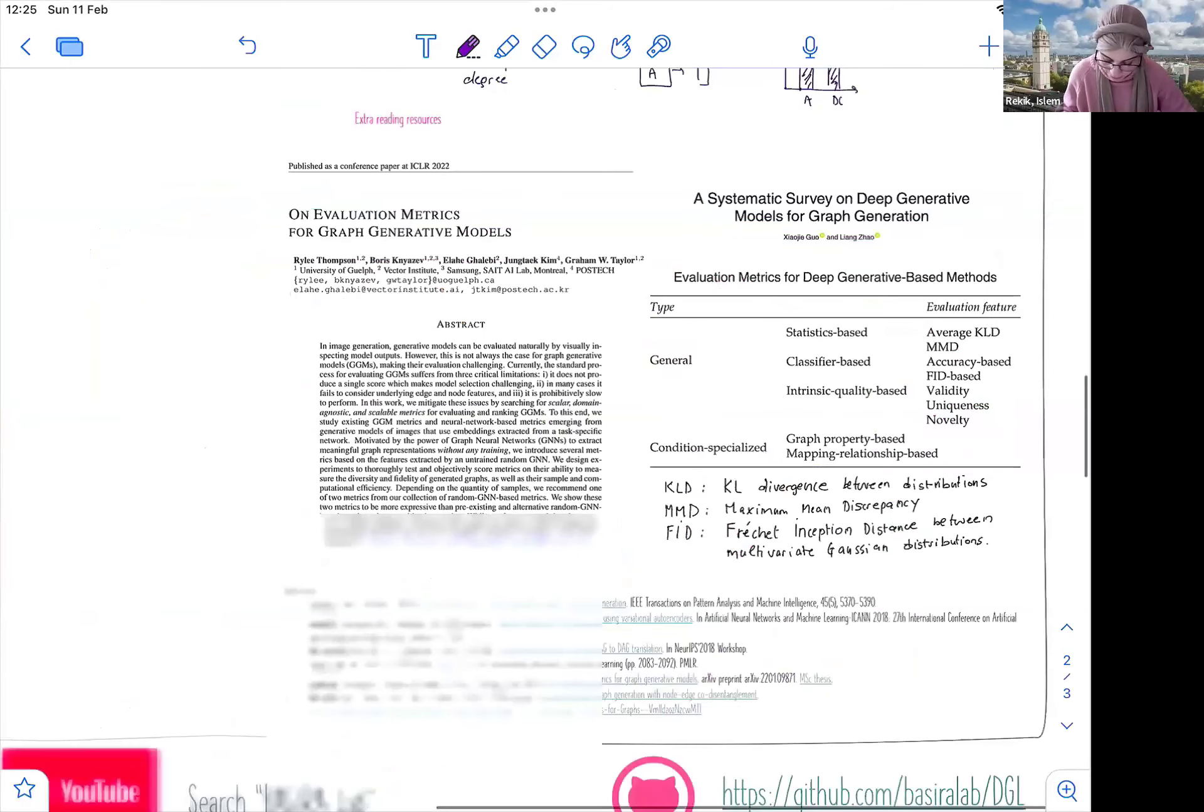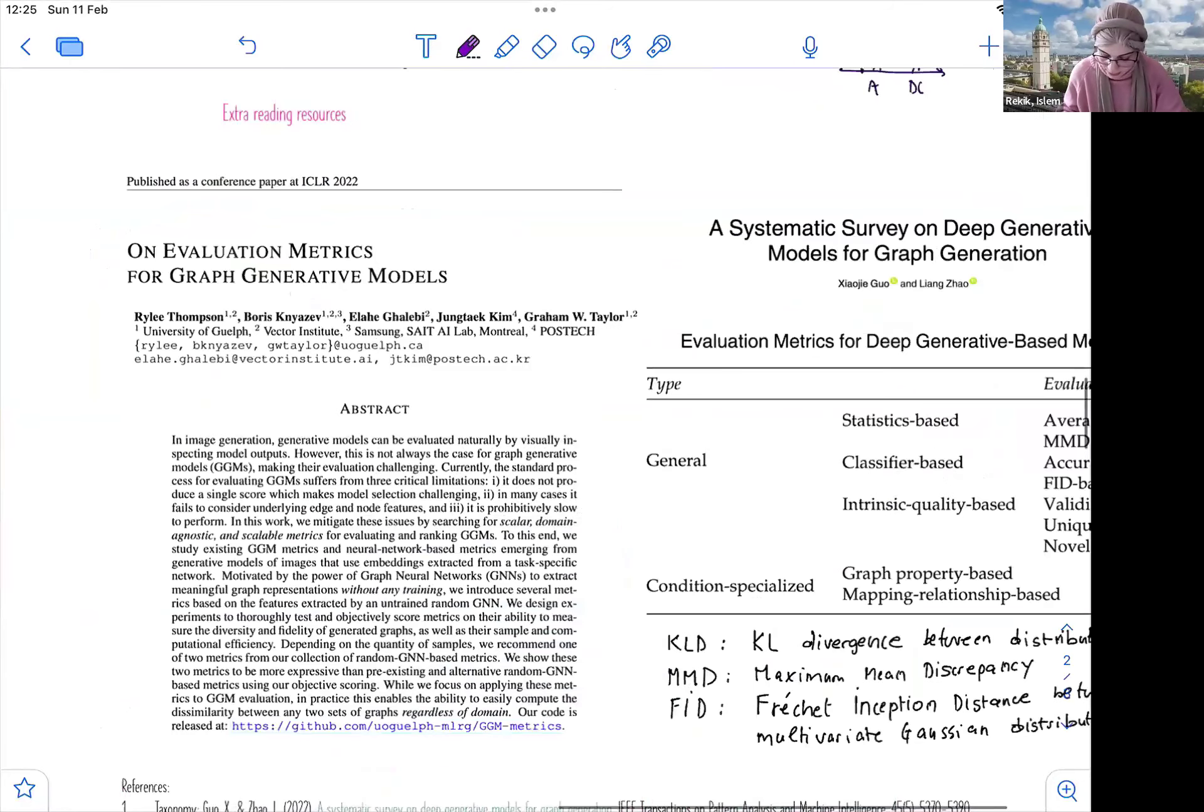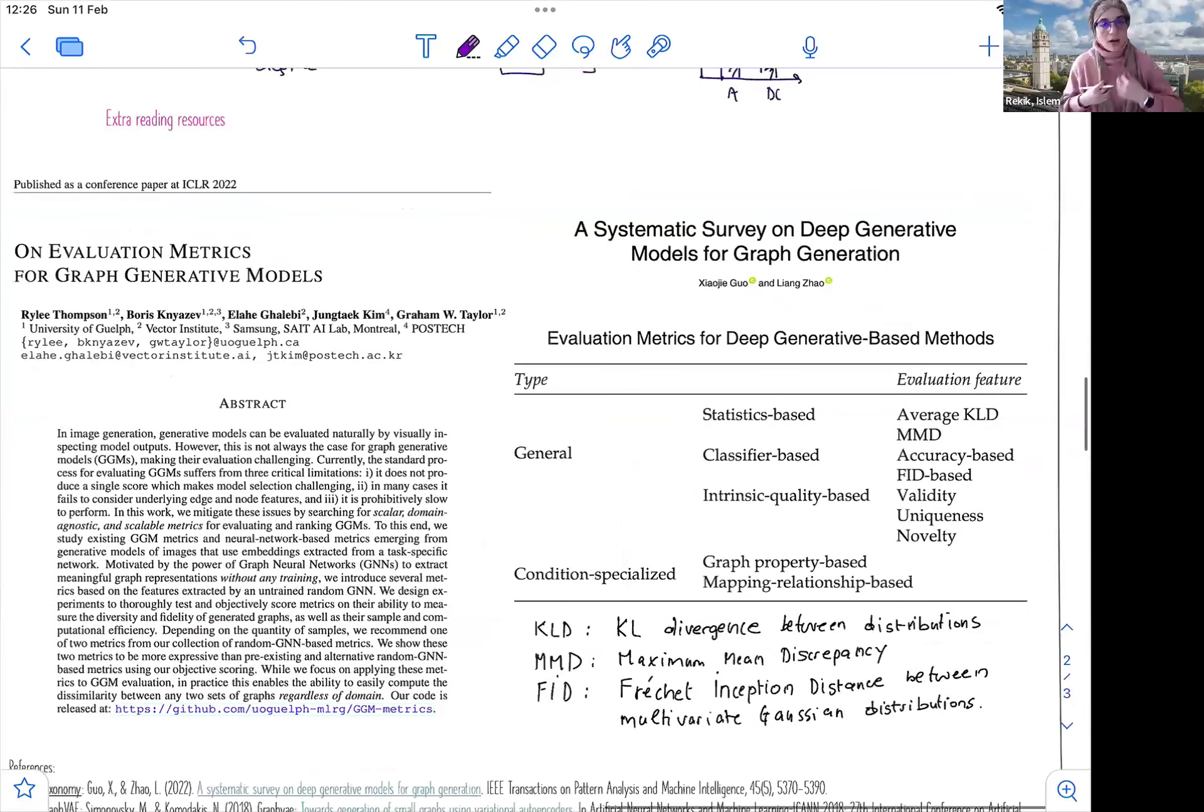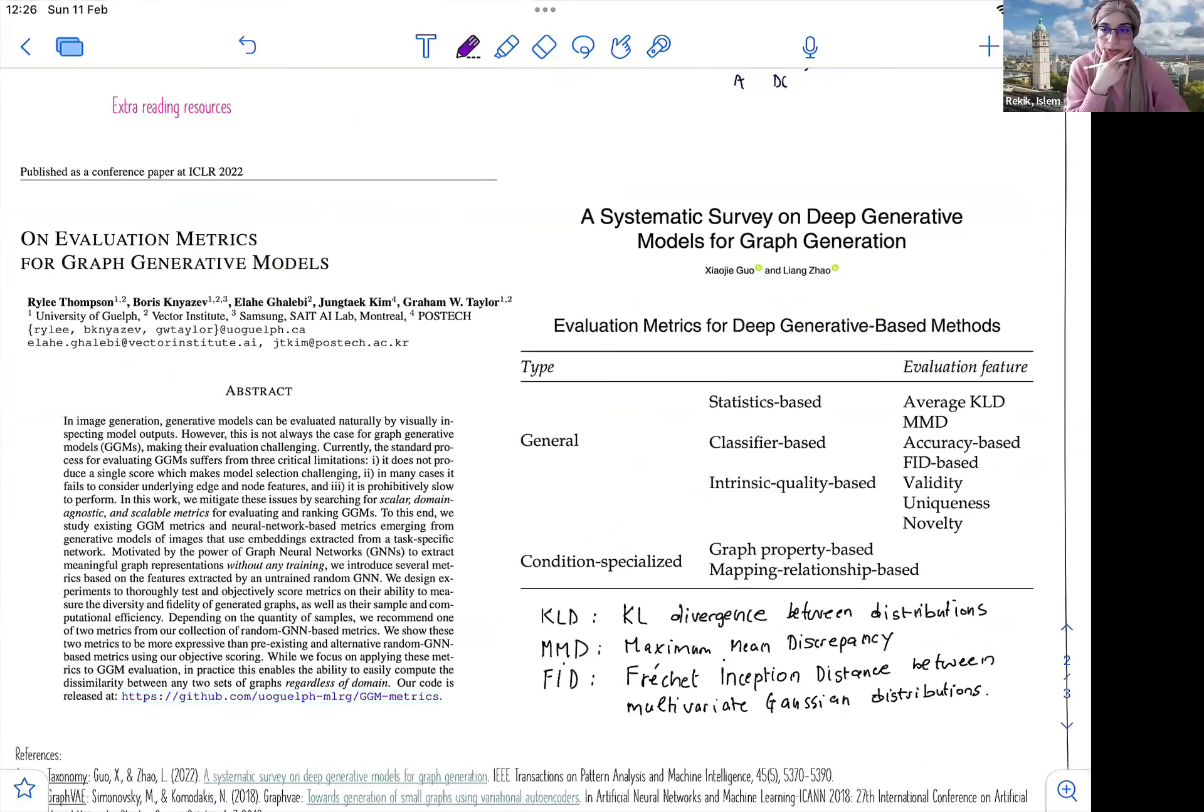So here are two papers that you guys can read. So first, in the systematic review that we used to do the taxonomy of graph generation models. So you can see that in this survey, deep generative models for graph generation, there are different types of evaluation metrics. So you can use statistic-based. So these are general. For example, the KL divergence, the maximum mean discrepancy.